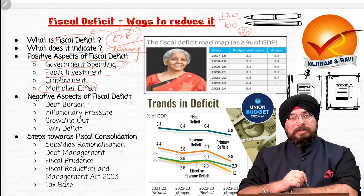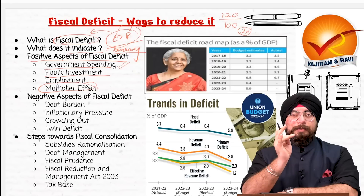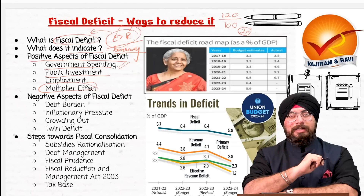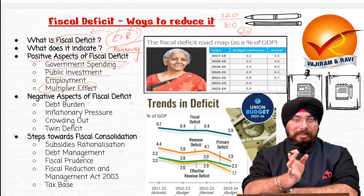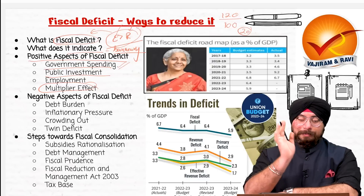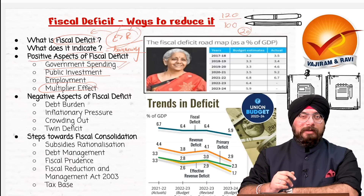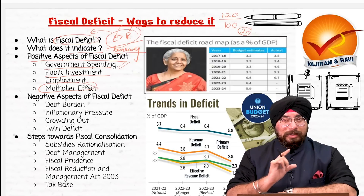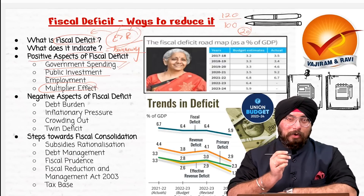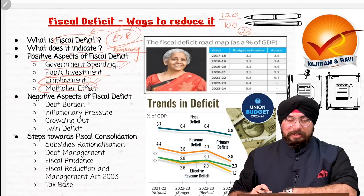Then public investments: government is spending money on building schools, roads, colleges, hospitals — things for public utilities. So when government is investing in public utilities, it is ultimately a positive thing. That is another positive aspect of fiscal deficit. Also, when government is spending so much money, job creation will happen because of the multiplier effect. For example, government building a bridge gives employment to many people. So job creation and employment generation are also positive aspects of fiscal deficit.